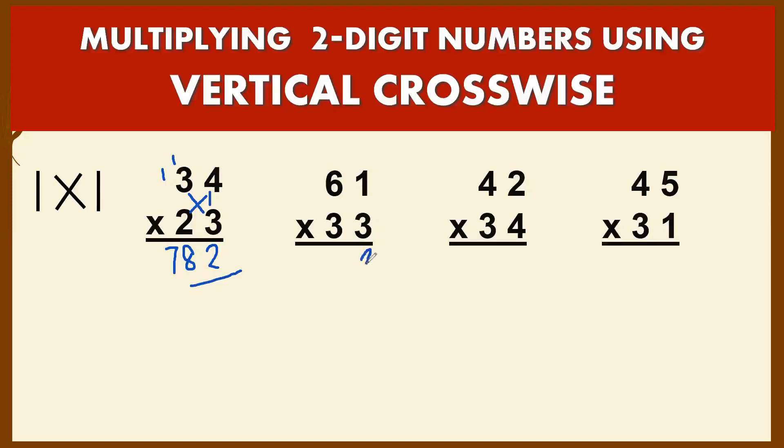Example number 2: 61 times 33. We have 1 times 3, which gives you 3. Crosswise: 6 times 3 is 18, plus 3 times 1, that's 3. 18 plus 3 is 21. Bring down 1 and carry 2. Then 3 times 6 is 18, plus 2, that's 20. So your answer is 2013.